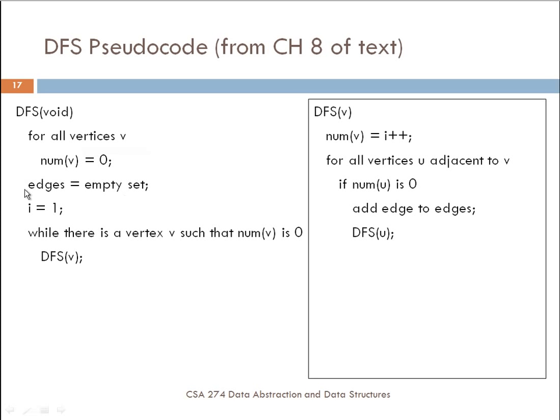It creates an empty set of edges and then sets a value of I equal to one. I is going to be used to mark each one of the nodes. Then basically, it checks to see whether or not there's been a vertex that hasn't been visited yet. And if it hasn't, then it performs or attempts to perform a depth first search starting at that vertex.